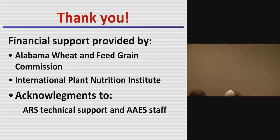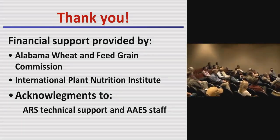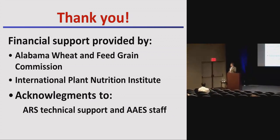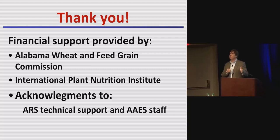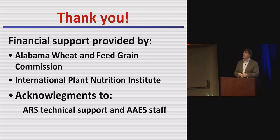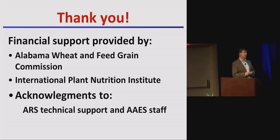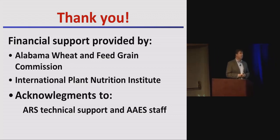Question from audience: On your high rates of UAN, did you have any tissue burn problems? No, we didn't. The plants were pretty small at the time of application, and even though the total was high — say 120 pounds — we weren't putting all of that on at once; some had already been applied in the fall. We used a shorter variety like AGS 2060 partly as protection against lodging, and while there are products that help reduce burn, we didn't evaluate those in this study.